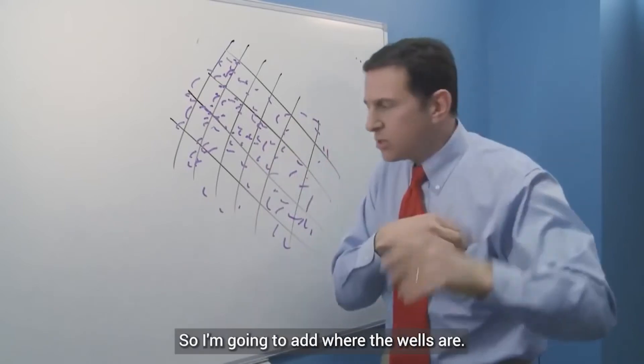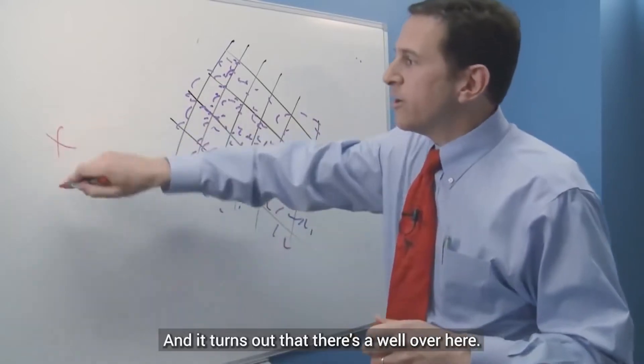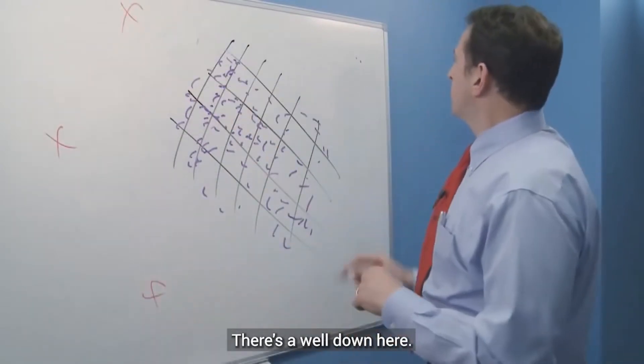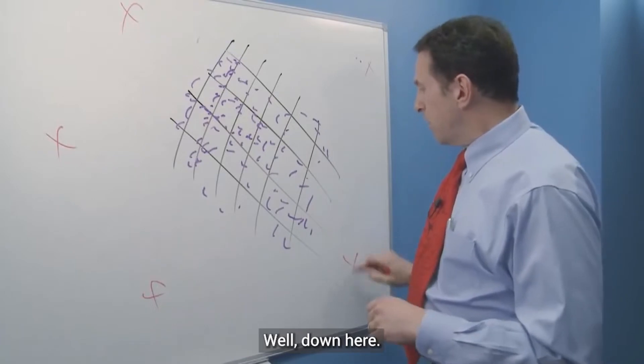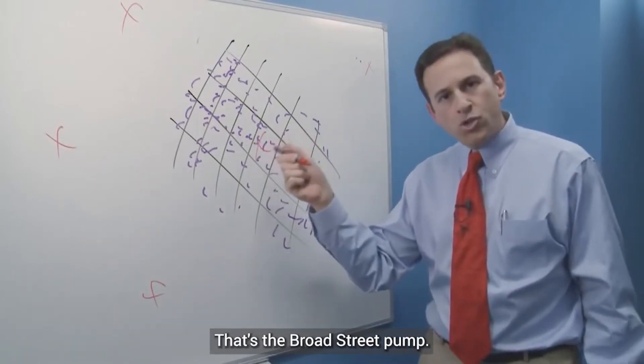And then he says, I think it's the water, so I'm going to add where the wells are. And it turns out that there's a well over here. There's a well up here. There's a well down here. There's a well right there. Well down here. And there's a well right here. That's the Broad Street pump.